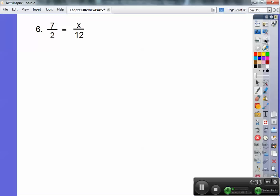This is called a proportion, a fraction equals a fraction. When you have a proportion, you can do this math procedure called cross-multiplying. So I'm going to multiply 2 times x equals 7 times 12, which is 84. That's where I got 84 from, 7 times 12. Then divide both sides by 2 and you get x equals 42.